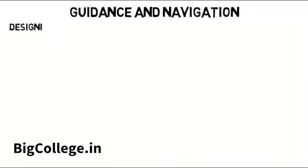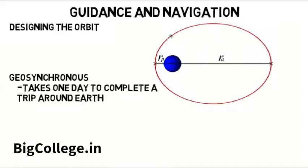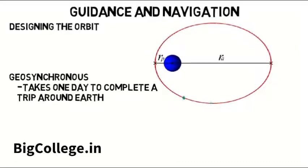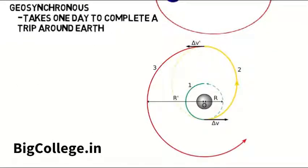Guidance and navigation is all about designing the orbit itself, or really just planning out the mission of how the spacecraft will travel. You may need the satellite to be geosynchronous, meaning it takes one day to complete a trip around Earth, so you have to look at what shape orbit you should have. Or if at some point you just need to change between orbits, the team would have to determine how much change in velocity there needs to be to do so.